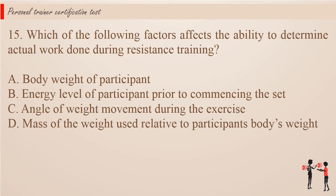Question 15. Which of the following factors affects the ability to determine actual work done during resistance training? a. Body weight of participant. b. Energy level of participant prior to commencing the set. c. Angle of weight movement during the exercise. d. Mass of the weight used relative to participant's body weight.